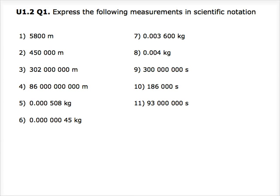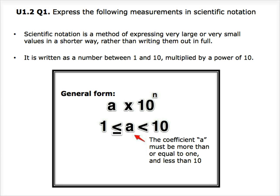Before we convert the following values into scientific notation form, let's take a look at what scientific notation is. Scientific notation is a method of expressing very large or very small values in a simplified manner instead of writing them out in full. It is written as a number between 1 and 10 multiplied by a power of 10. This can be shown in the general form a times 10 to the power of n, whereby the coefficient a has to be more than or equal to 1 and less than 10.